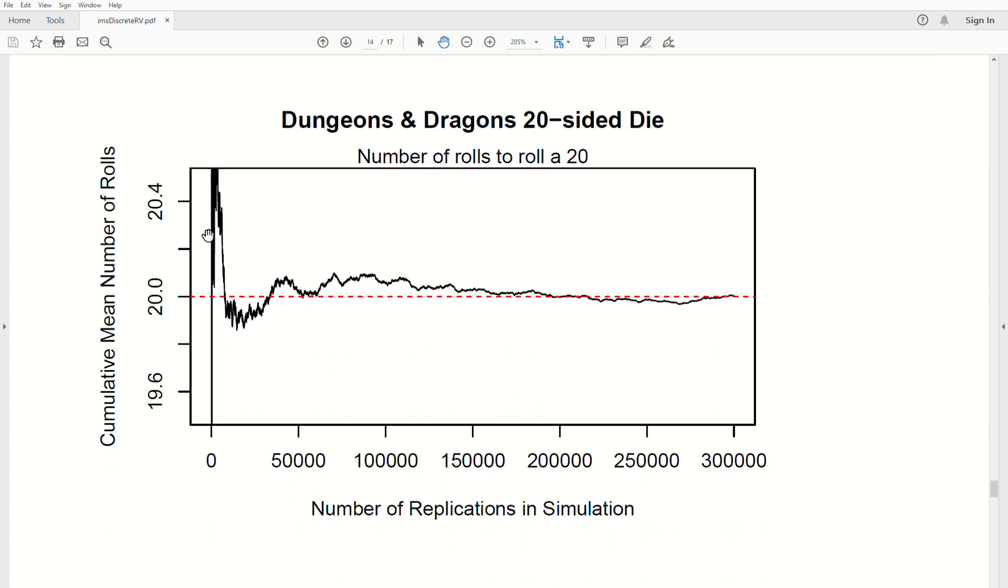Initially, it's pretty variable, right? It might take 50, and then 20, and then 10, and then 5, and then 50. But as we proceed through each experiment, that mean number of rolls, you can see approaches 20. And of course, if we go to infinity, it'll equal 20.